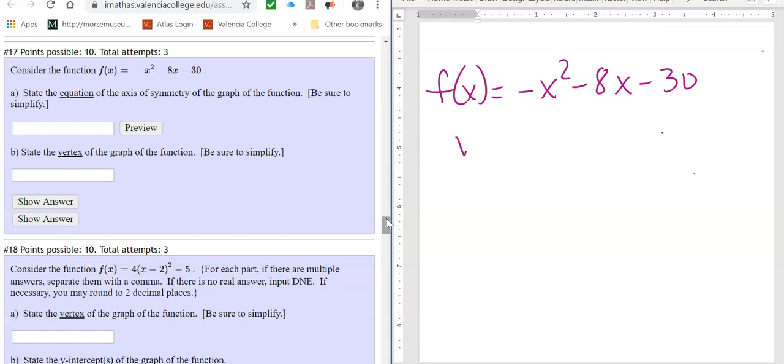So it asks us for the axis of symmetry and the vertex. To find the vertex when it's in standard form, we say the vertex, the x component, which on our vertex we call, our vertex is always h and k, so our x coordinate is h.